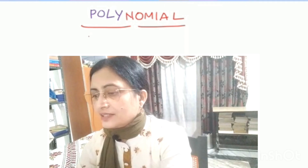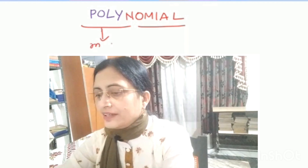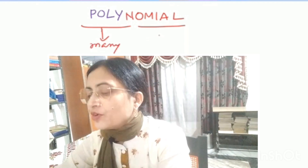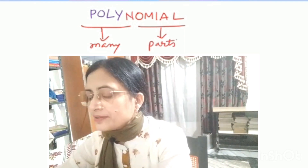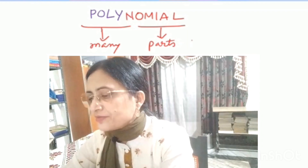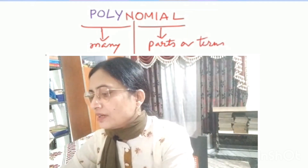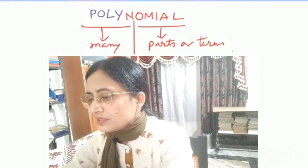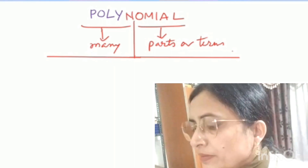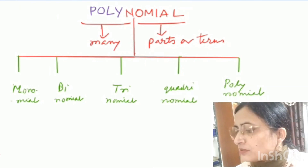Now let's understand the concept of polynomials. 'Poly' means many and 'nominal' means parts or terms. There are different types of polynomials — some have been given special names: monomial, binomial, trinomial, quadrinomial, and polynomial. Monomial, binomial, trinomial, and quadrinomial all fall under the broader category of polynomial.